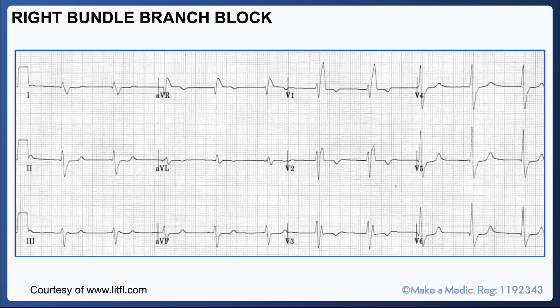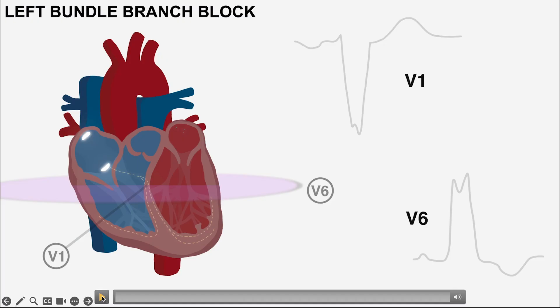You can see that there's appropriate discordance of T-waves in V1 and V6. The opposite happens in cases of left bundle branch block, and this is what it looks like.